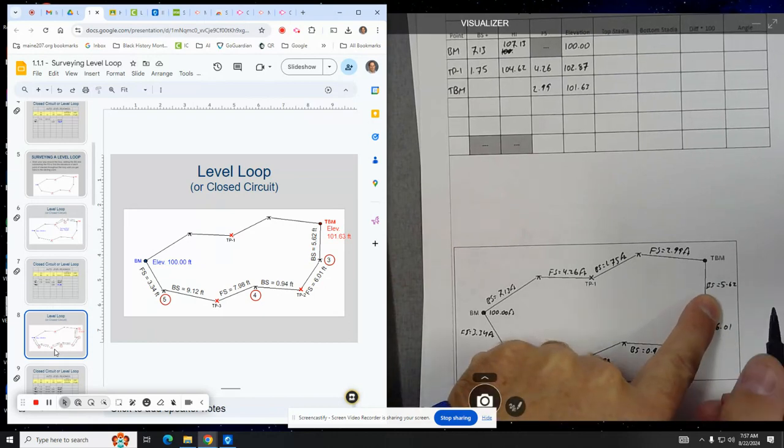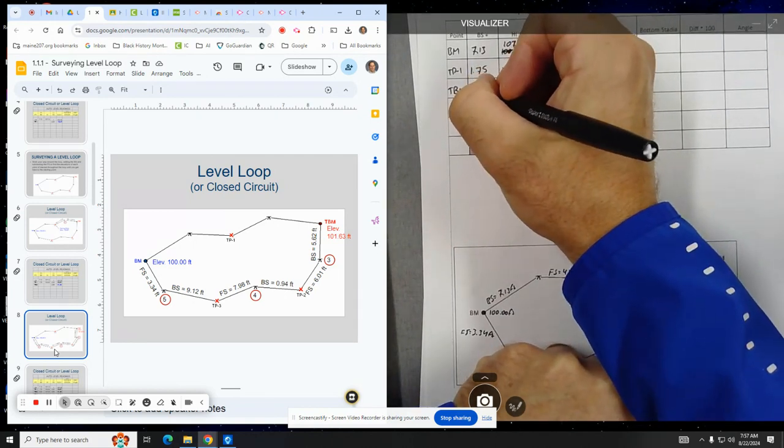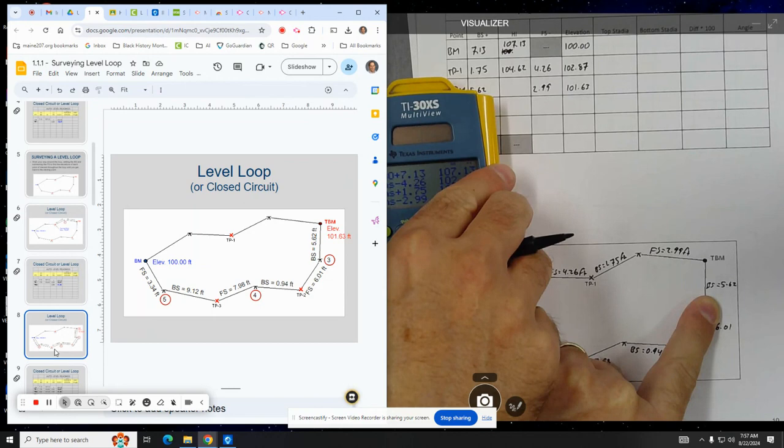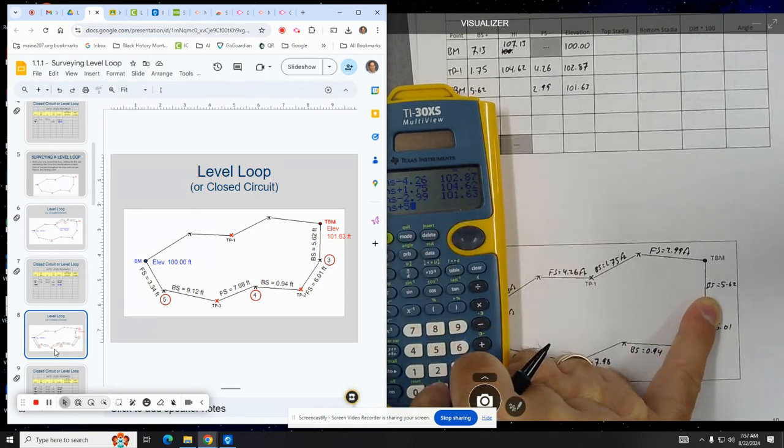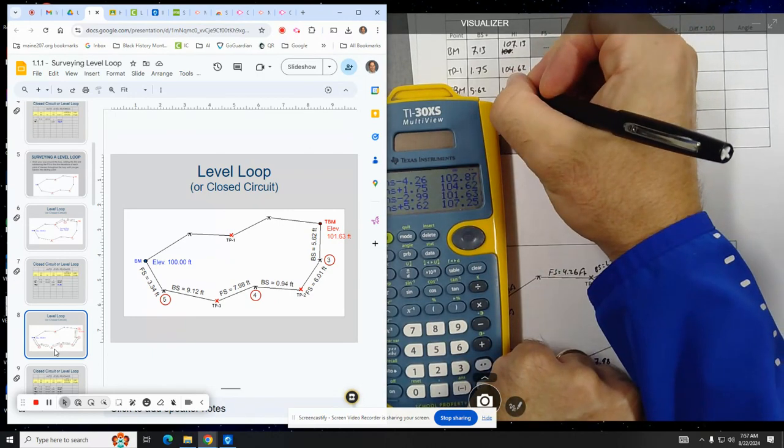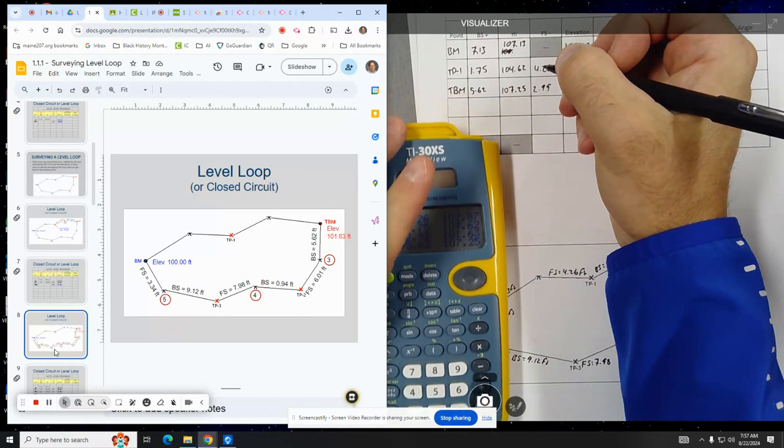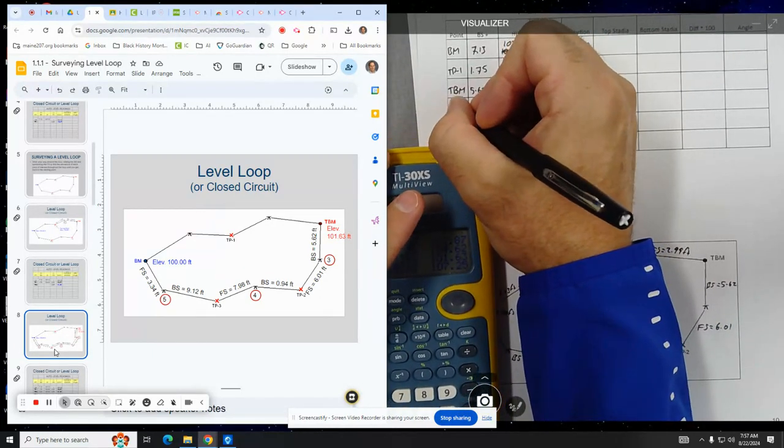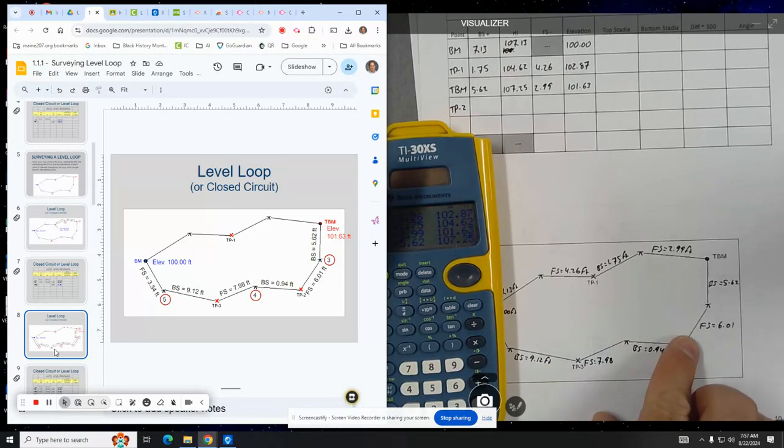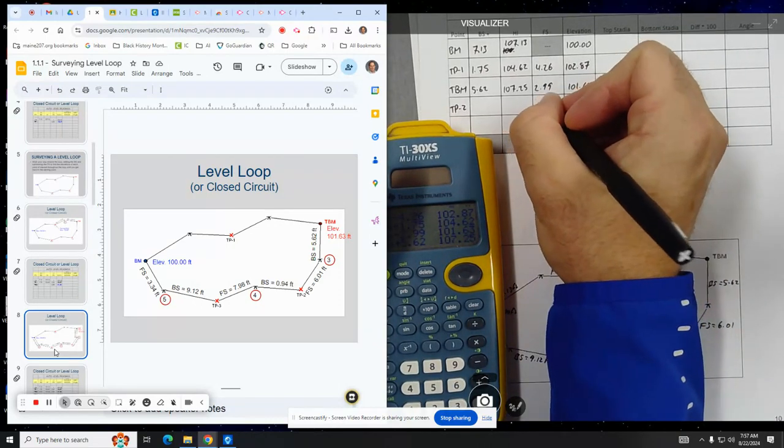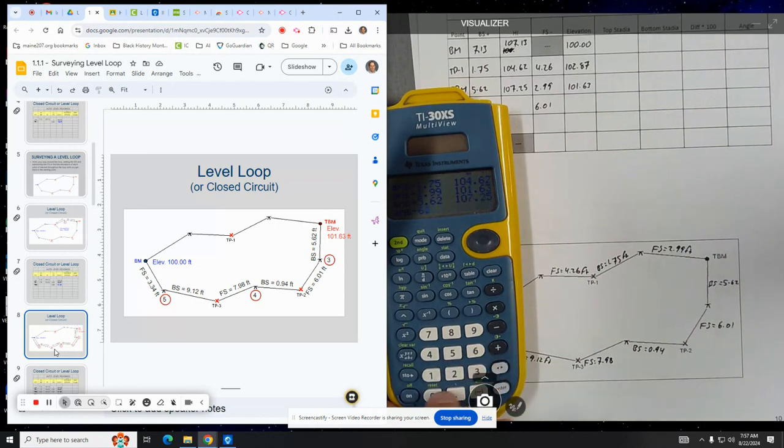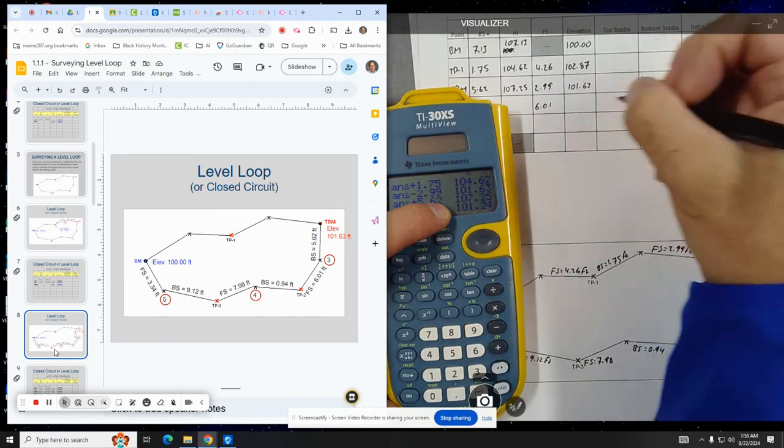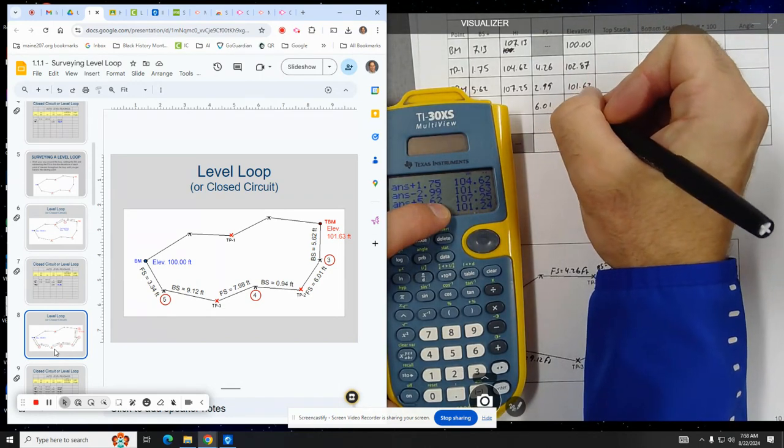And so this is where we left off. So the back sight looking back to the TBM is 5.62. And so we add that. So we would say plus 5.62 is 107.25. And then the foresight to TP2 is 6.01. So minus 6.01, because foresight is always subtracted to get back down to the elevation of TP2. So that would be 101.24.